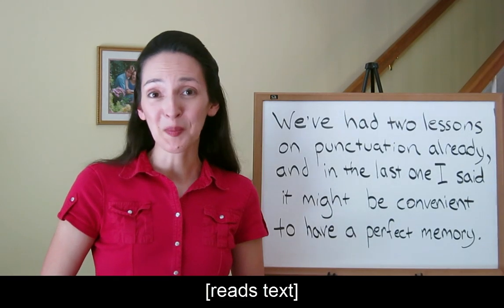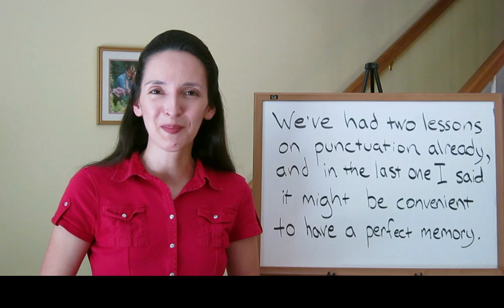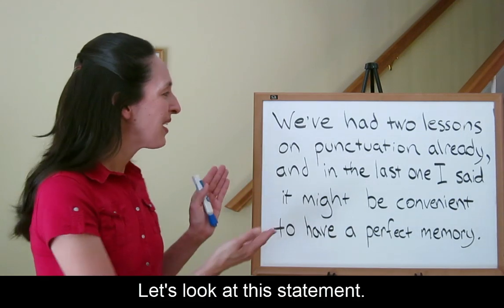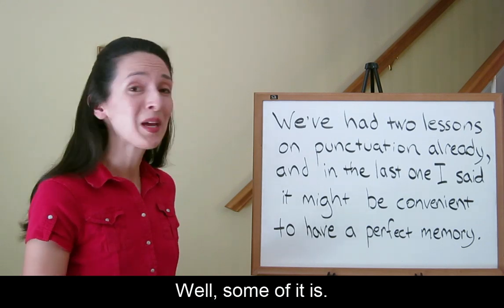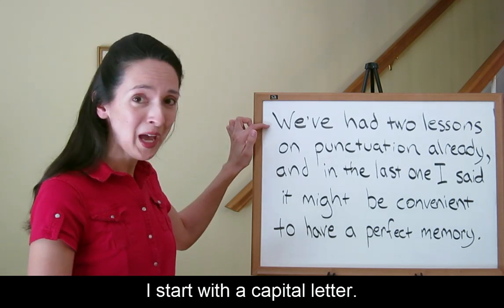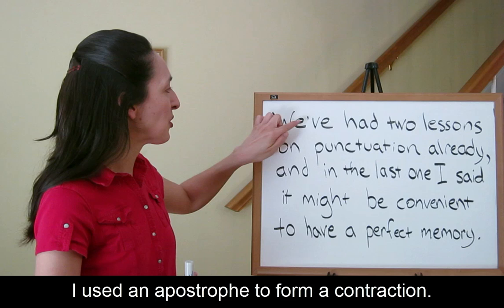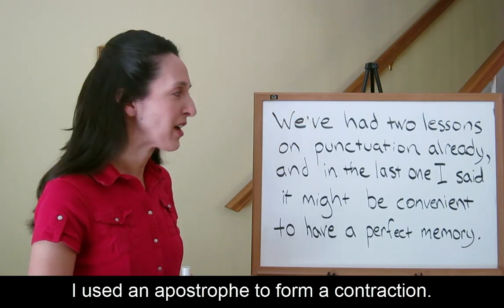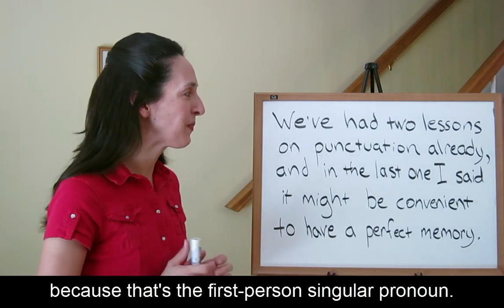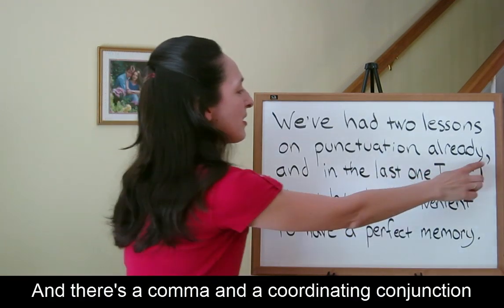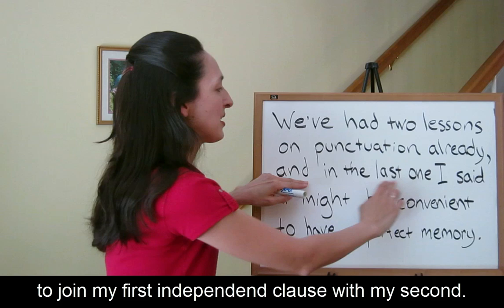We've had two lessons on punctuation already, and in the last one I said it might be convenient to have a perfect memory. Let's look at this statement. Is the punctuation correct? Well, some of it is. I start with a capital letter. I have a period, so there's final sentence punctuation. I used an apostrophe to form a contraction. I remembered to capitalize 'I' because that's the first person singular pronoun. And there's a comma and a coordinating conjunction to join my first independent clause with my second.